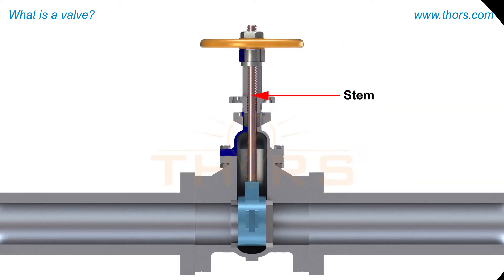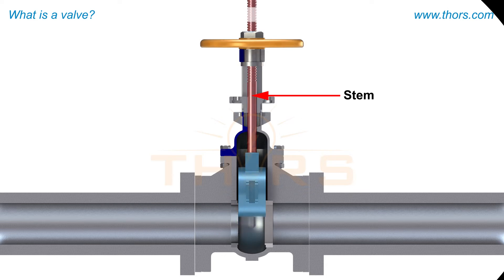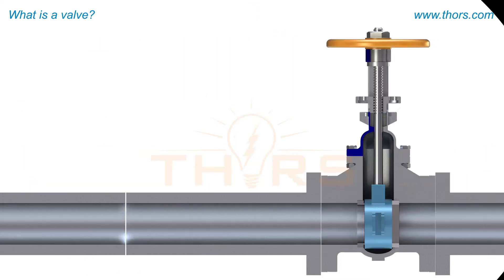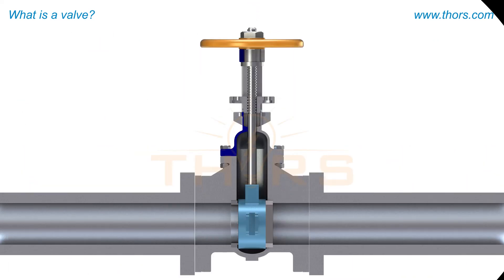The stem is connected to the operator on one end and the valve's closure member on the other end. The stem changes the position of the closure member to open or close the valve. A gland packing arrangement between the stem and the bonnet helps prevent leakage to the atmosphere.